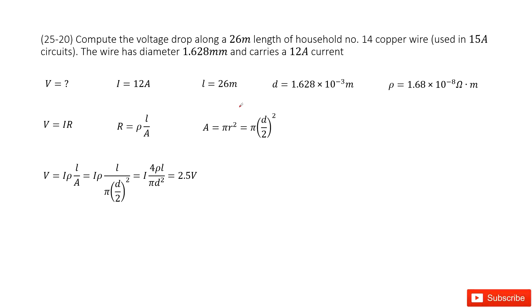Welcome to my channel. I'm Zhang Jingxu. Let's look at problem 20 at chapter 25. Chapter 25 is about electrical currents and resistance. So you need to find the voltage along a wire, and this wire carries a current of 12 Amps.